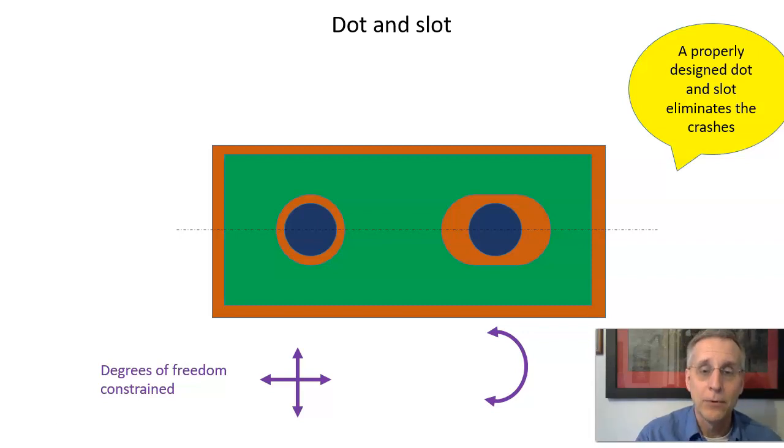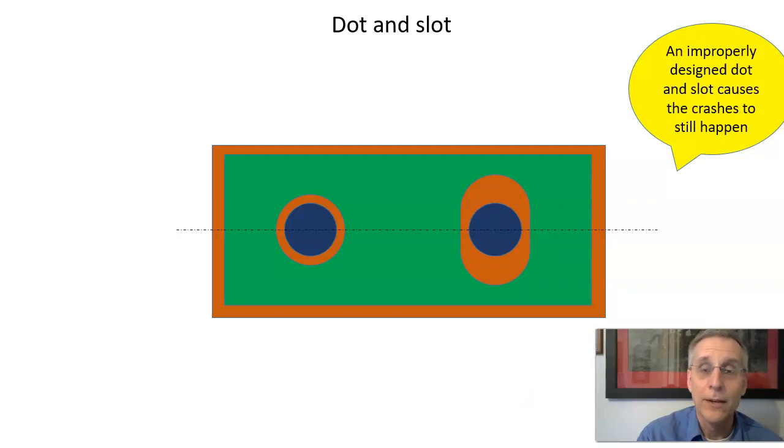However, a lot of people will try to do a dot and slot and they'll do it wrong. They might do the slot like this, rotating 90 degrees. Well, what happens if the slot is rotated 90 degrees? We get a crash again like we did with the hole, and the crash does not fulfill its purpose. The slot doesn't do what it's supposed to do.